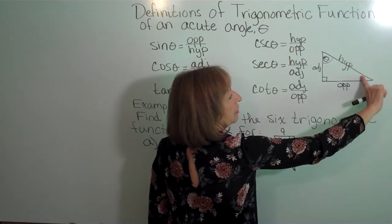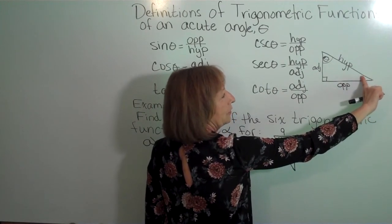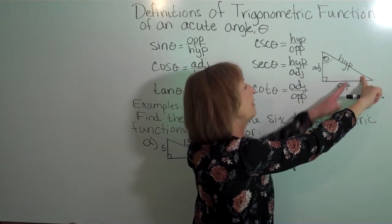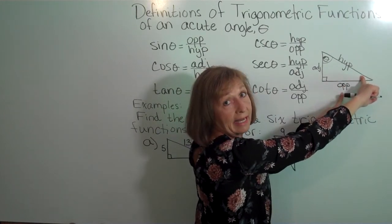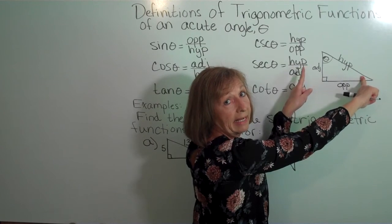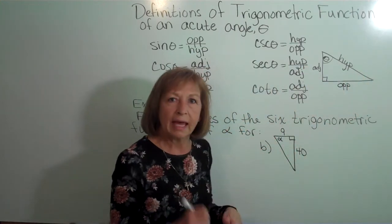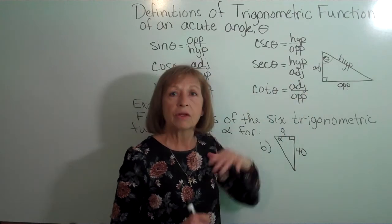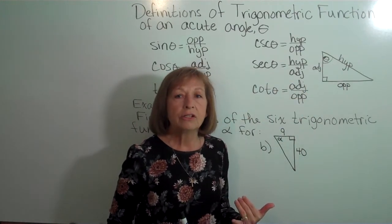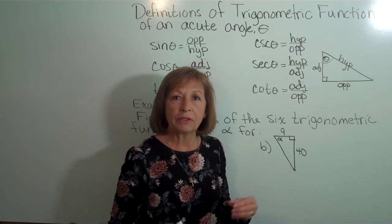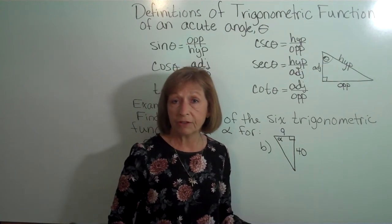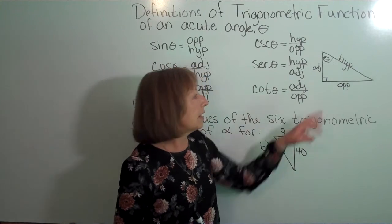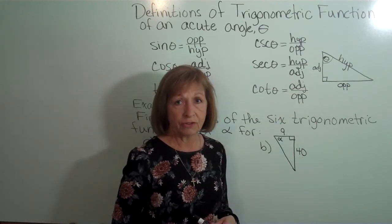If I were to concentrate on the other acute angle, the hypotenuse would still be the hypotenuse, but then this side would be adjacent to that angle and this side would be opposite to that angle. So you always want to make a little notation to yourself when you have an angle marked in your triangle — which angle you're taking the trig functions of — and write in what the hypotenuse, the opposite side, the adjacent side, etc. are.